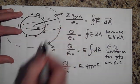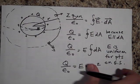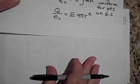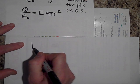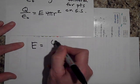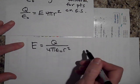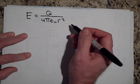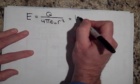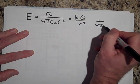When I add up all the dA's I just get the surface area of a sphere: 4π times little r squared, where little r is how far out you are. Solving for the electric field, E equals Q over 4π epsilon-naught r squared — and that's the same as kQ over r squared, because 1 over 4π epsilon-naught equals k.